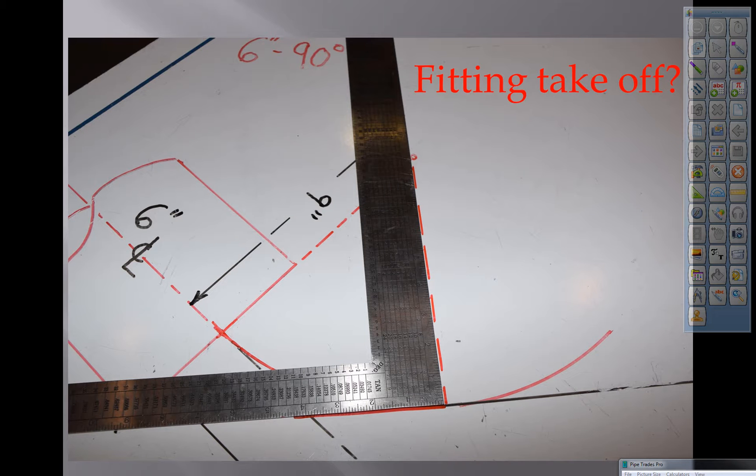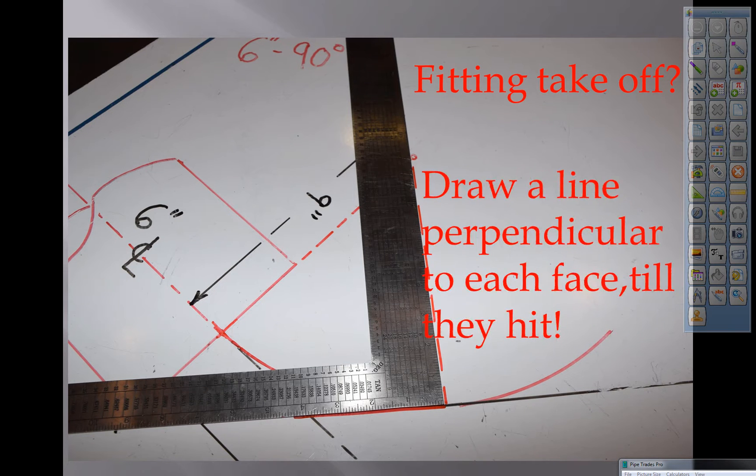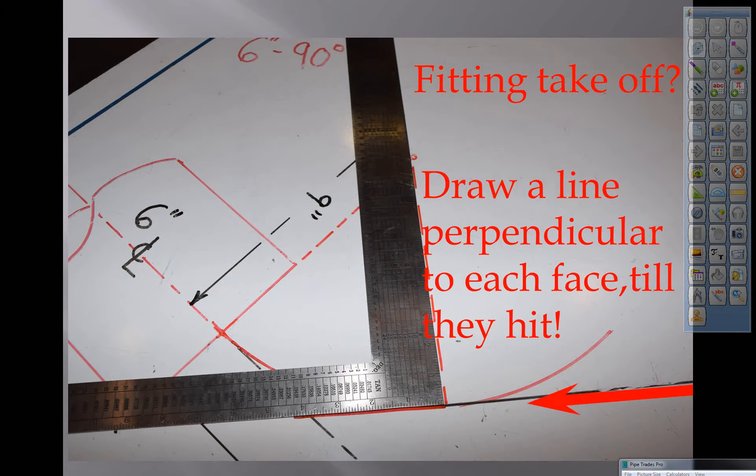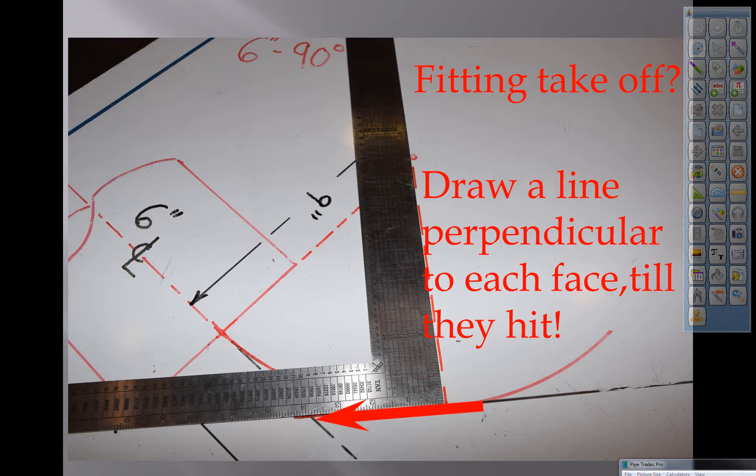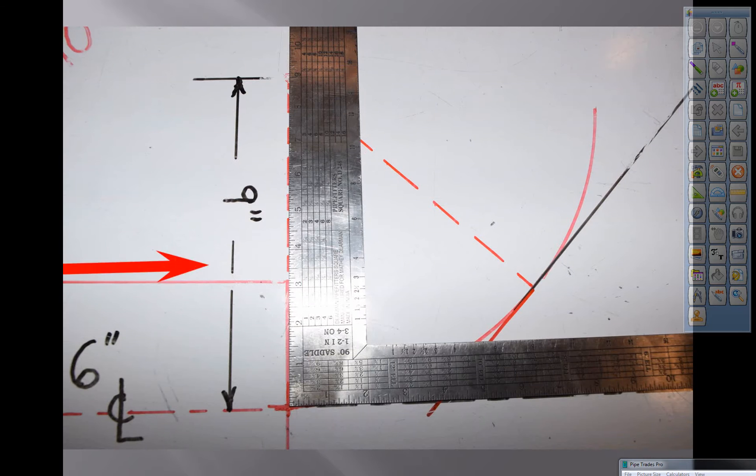Now we have to come up with the fitting takeoffs. We're going to draw a line perpendicular to each face until they hit in the center, which would be a vertex and both of those would be equal. We're perpendicular to the face. Come up with the other face. Perpendicular.